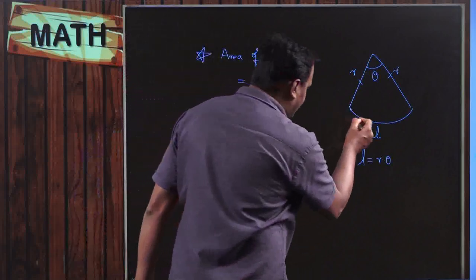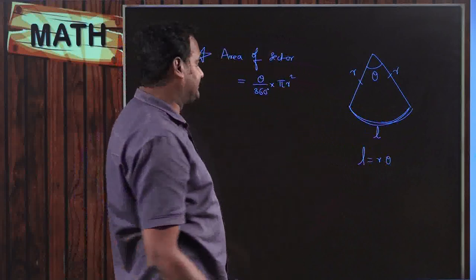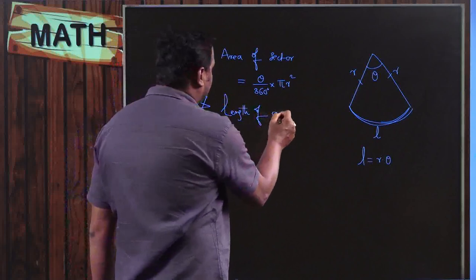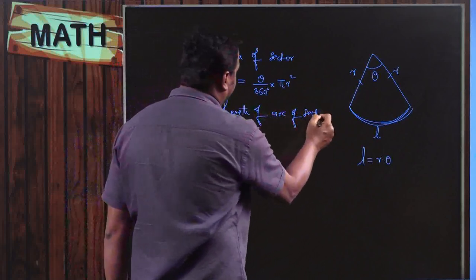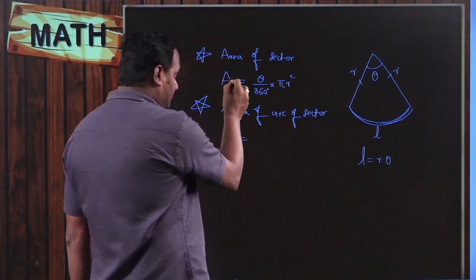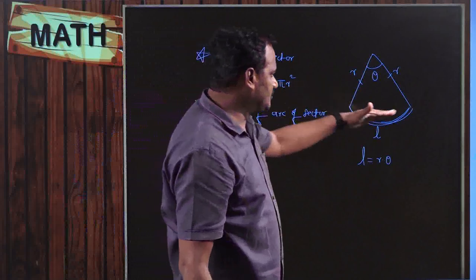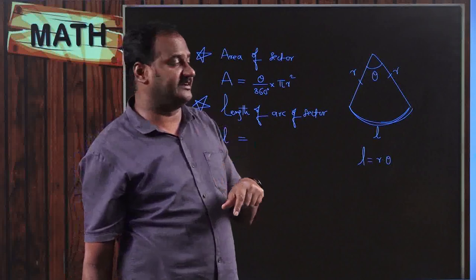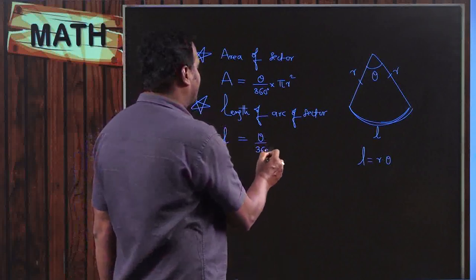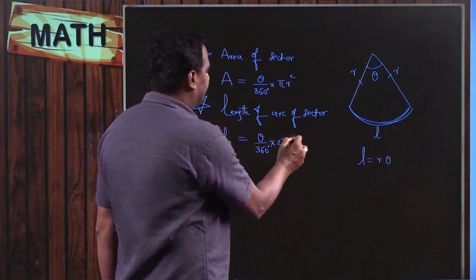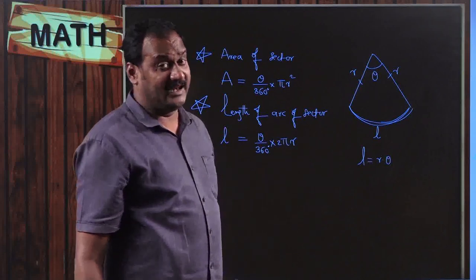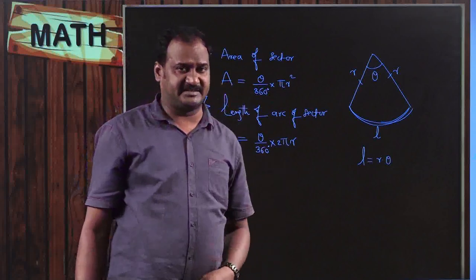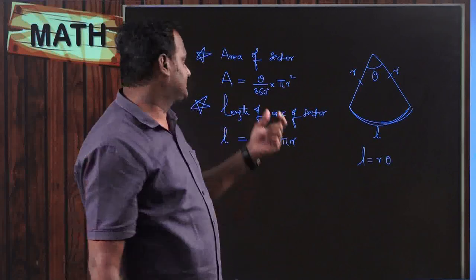Similarly, the length of arc of the sector — since it is a part of the circumference 2πr — is θ/360 × 2πr. So please remember these two formulas: area of sector = θ/360 × πr², and length of arc of sector = θ/360 × 2πr. In grade 10 CBSE curriculum, most area problems use these two formulas.